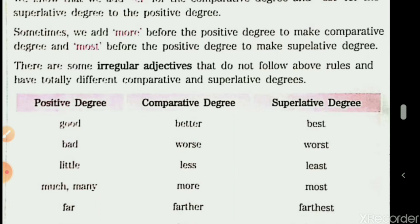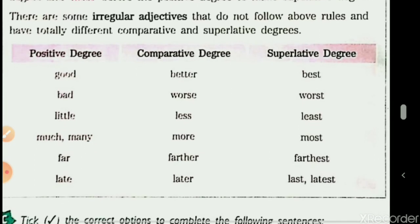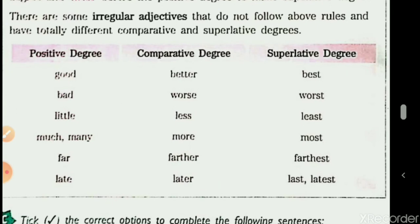There are some irregular adjectives that do not follow the above rules. For example: good — better — best; bad — worse — worst; little — less — least; much/many — more — most; far — farther — farthest, or further — furthest. Also: late — later — last. For 'old,' you can use old — older — oldest, or the irregular form old — elder — eldest.